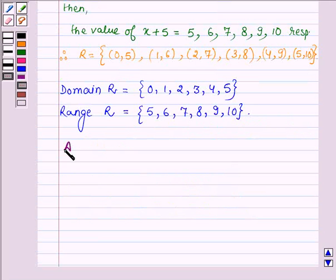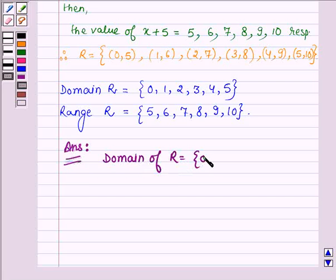And so our answers are: First we have to find the domain of R. So domain of R is the set having elements {0, 1, 2, 3, 4, 5}.